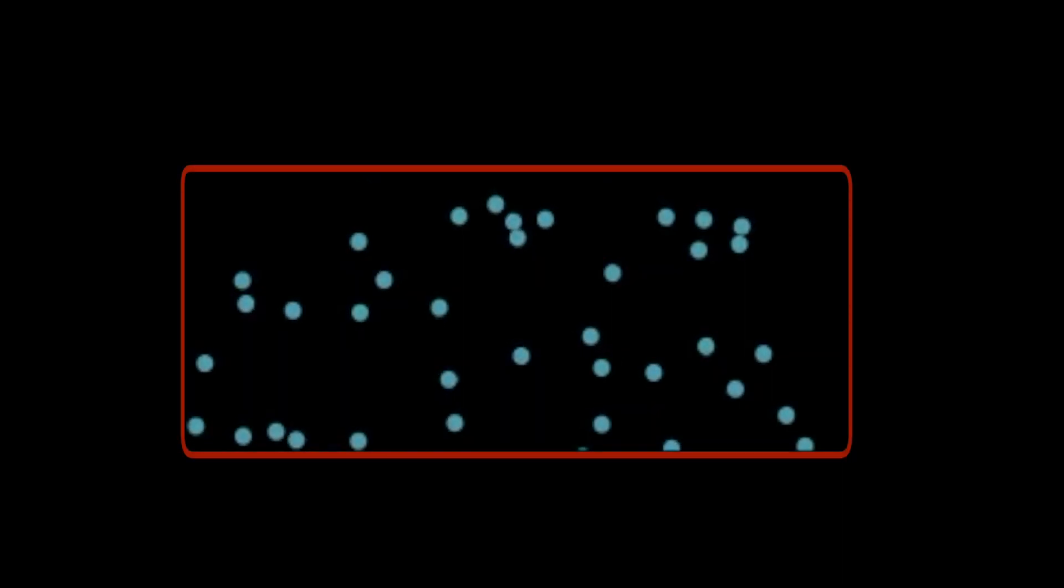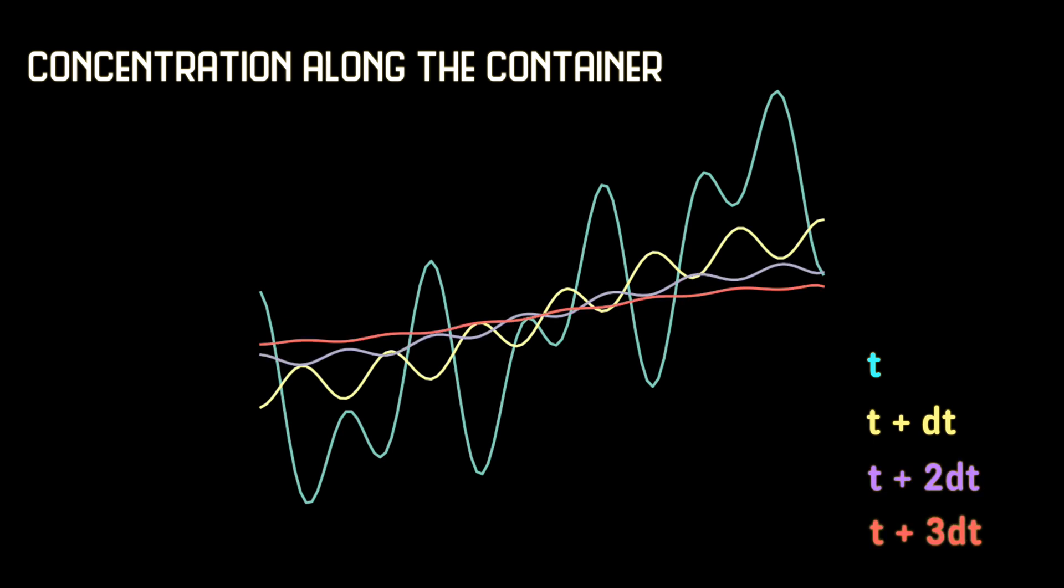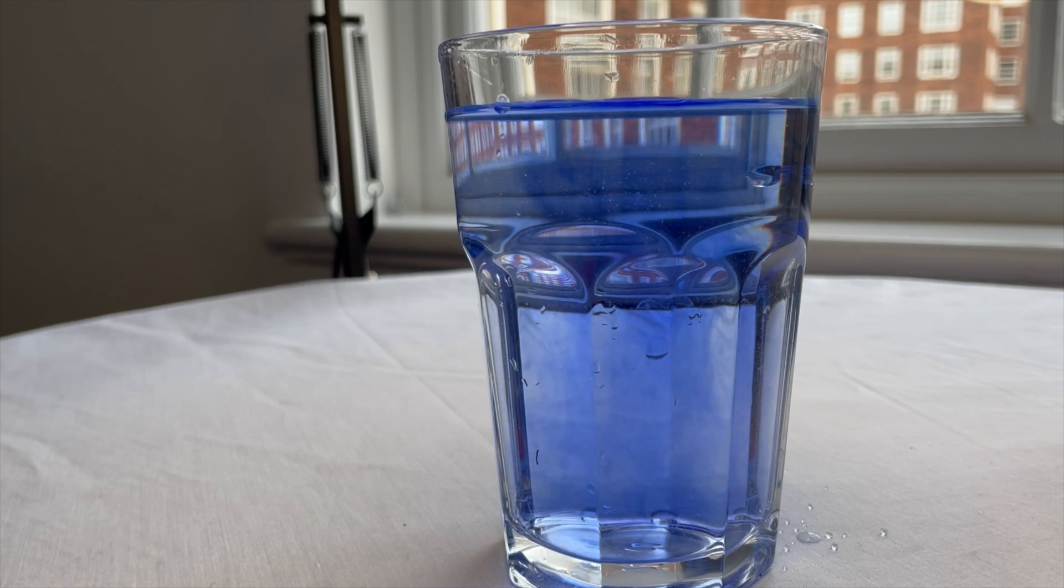We can solve this equation numerically and plot the concentration profile. Here I am using specific initial conditions, and you can try the Python code yourself. The link is in the description. Anyway, this is how concentration looks like at some time t. This curve is at t plus delta t, and so on. It levels out, which again reminds us of how ink distributes uniformly around the cup. So what does it have to do with the time direction?